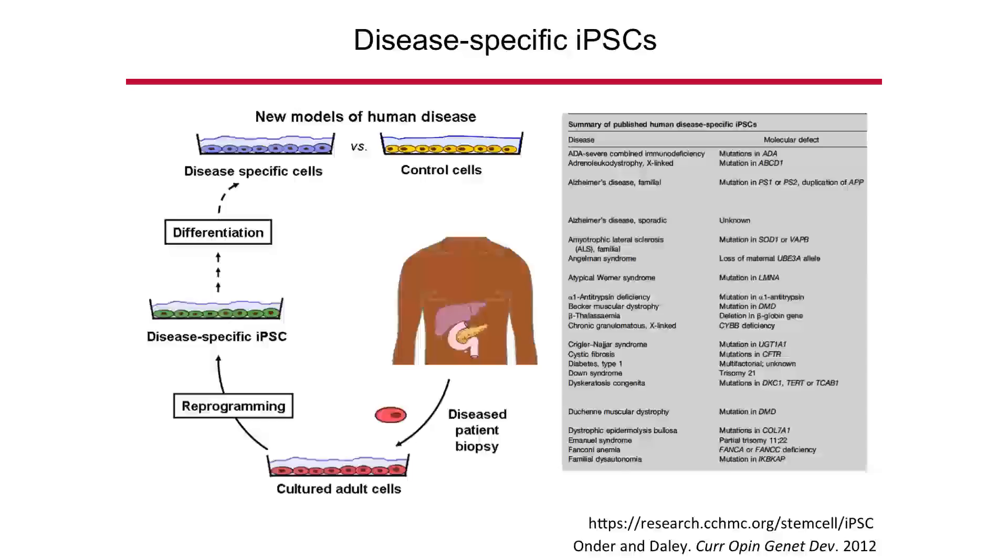For many diseases, stem cell models have already been created — for example, thalassemia or Alzheimer's disease. One disease we are working on is Familial Mediterranean Fever (FMF), a very prevalent genetic disease in Turkey that affects the immune system, resulting in an autoinflammatory disorder. About 20% of the Turkish population are carriers, and if two carriers have a child, there is about a one-in-four chance that the child will have this disease.